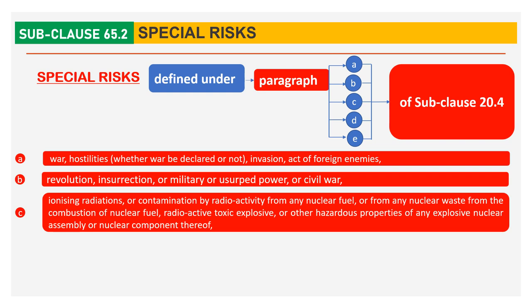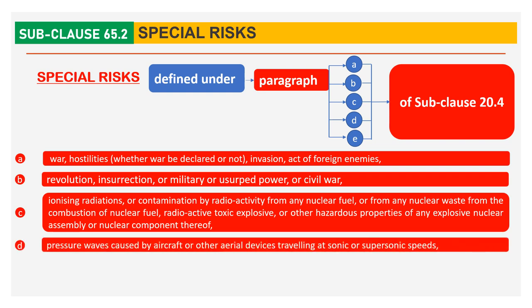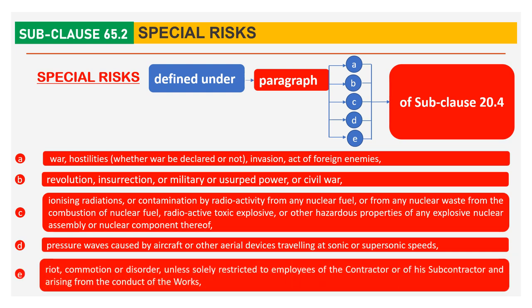Risk C: Ionization, Radiation, Contamination by Radioactivity and other like risks. Risk D: Pressure waves caused by aircraft or other aerial devices traveling at sonic or supersonic speeds. Risk E: Riots, Commotion or Disorder, unless solely restricted to employees of the contractor or of his sub-contractors and arising from the conduct of the works.